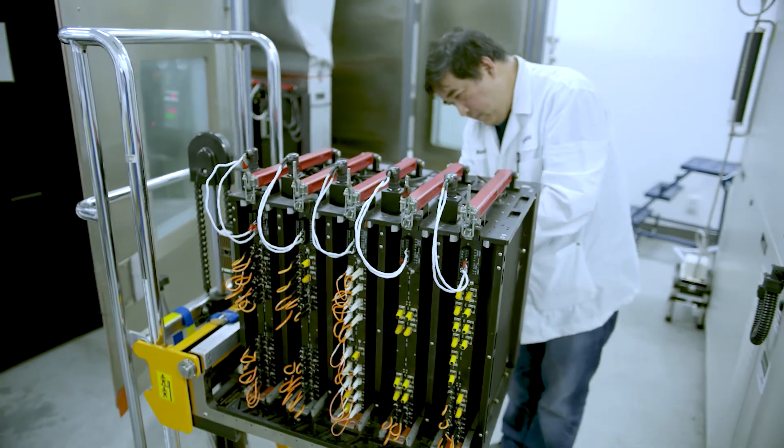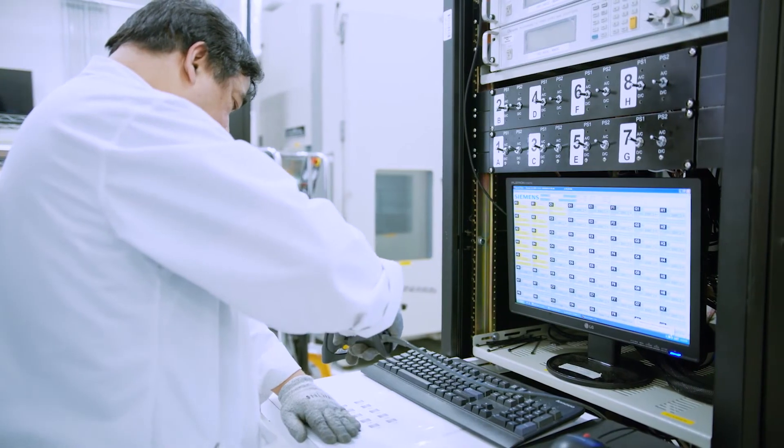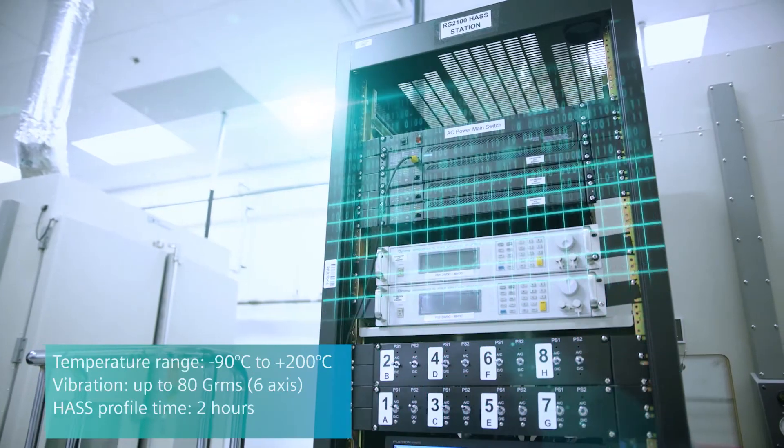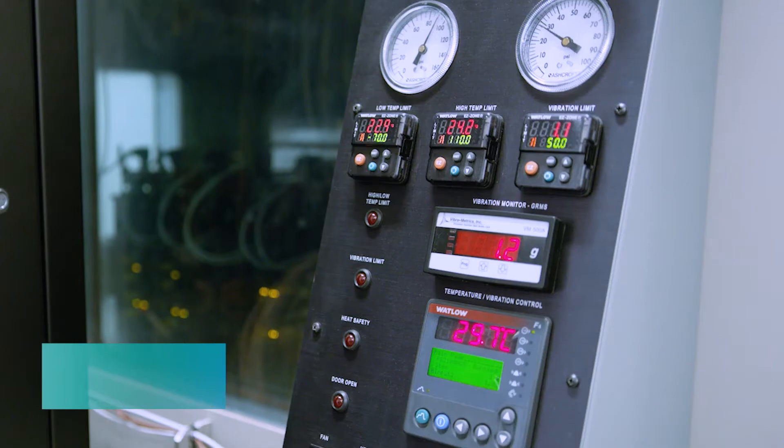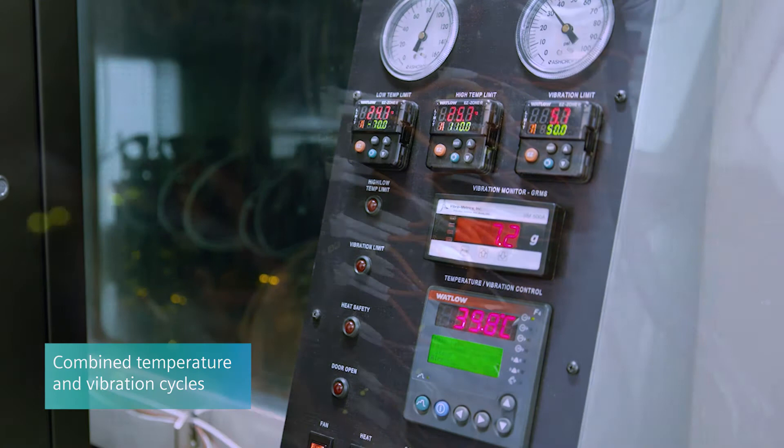The four quadrants per chamber allow for multiple products to be tested simultaneously. A RuggedCom specific test script is then launched to automate the test monitoring of running units. The typical HASS test will run for two hours with combined temperature and vibration cycles.